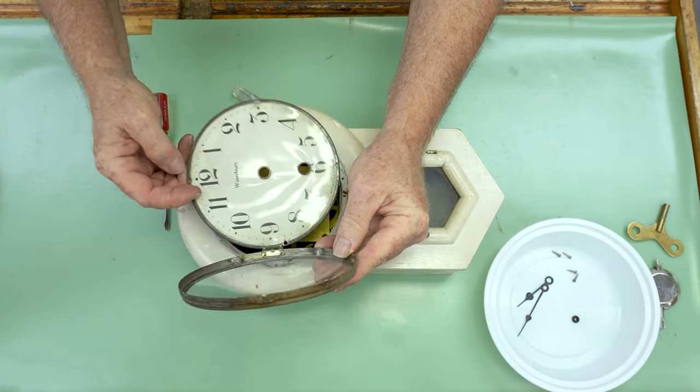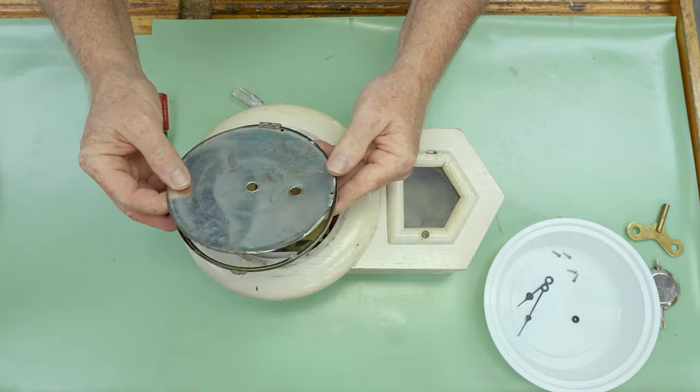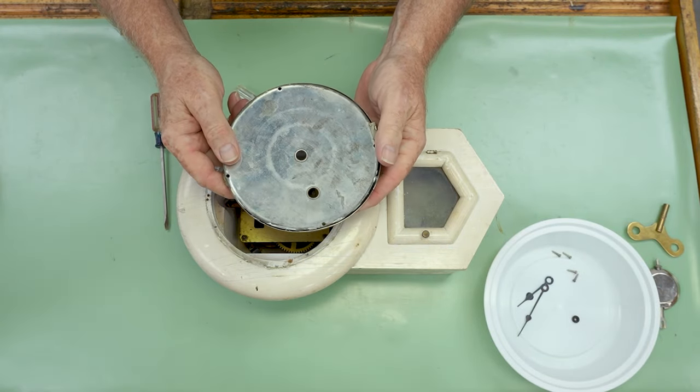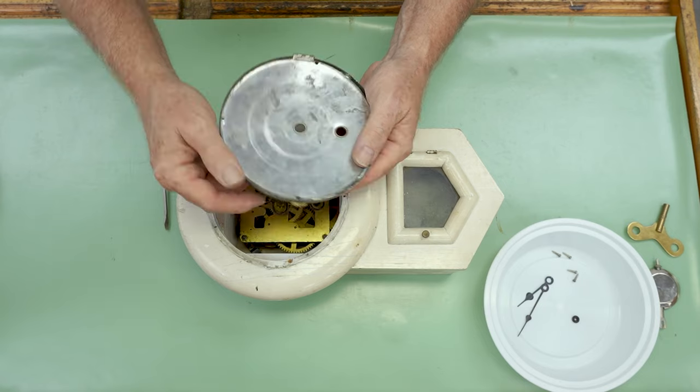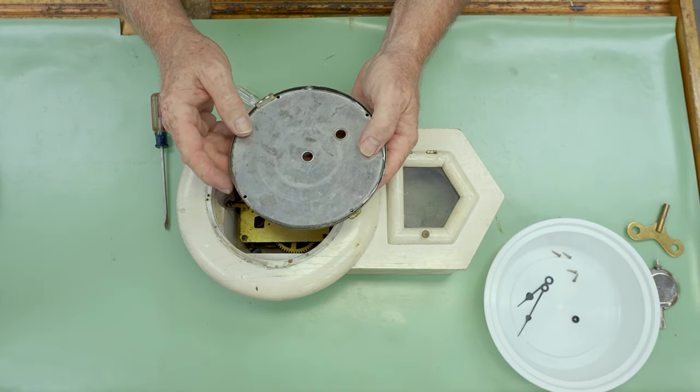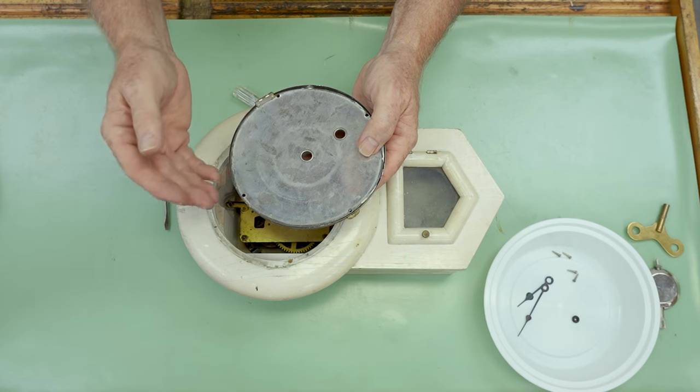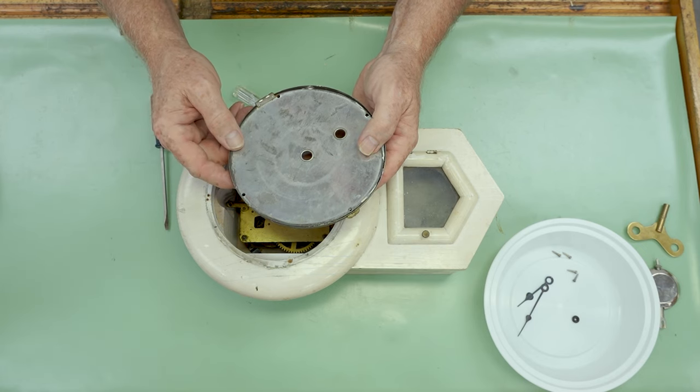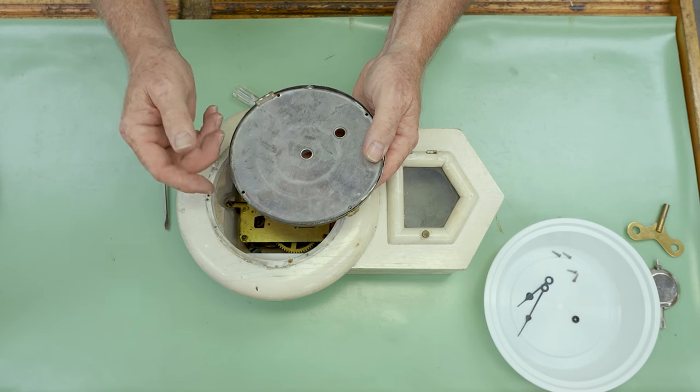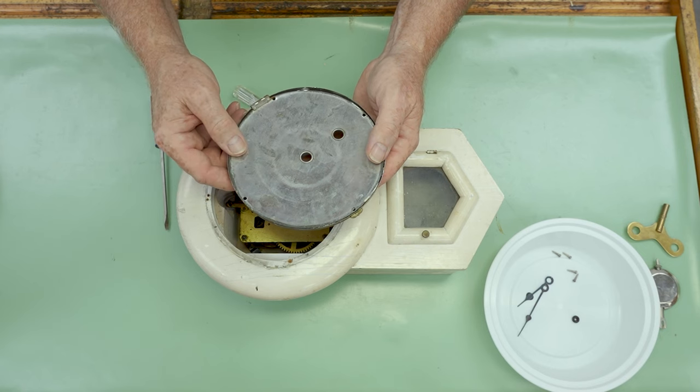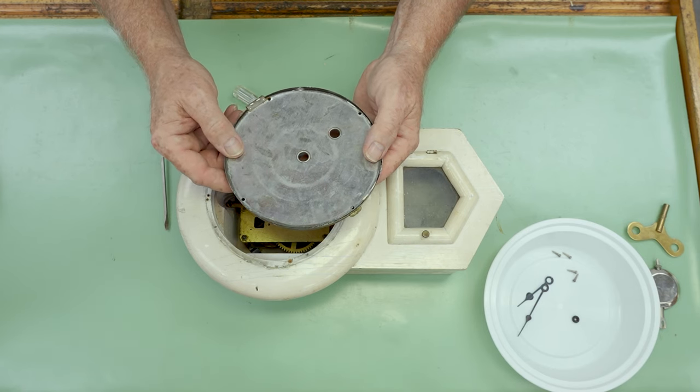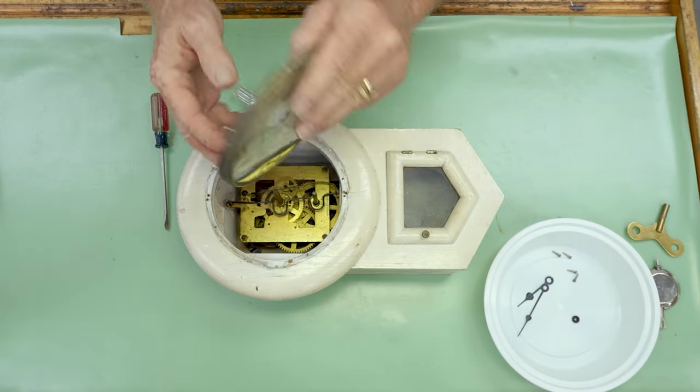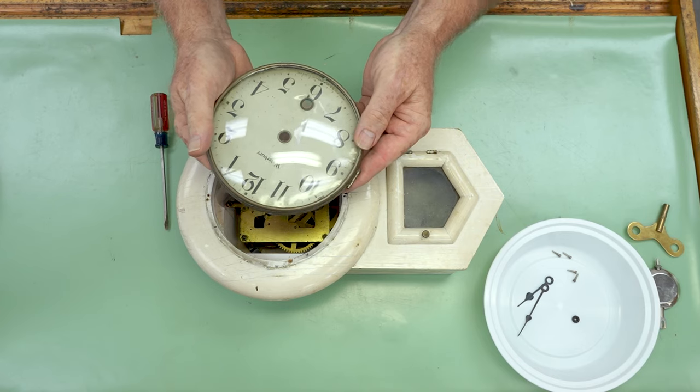Now, whenever I remove a dial from the movement, I always look on the back of it because it's amazing how many clockmakers would have put the date that say something like lubricated or oiled. Sometimes they'll put a name, initials. Sometimes they put the weather, what the weather is for that particular day that they were working on it. This one doesn't have anything like that. So we'll just put that safely aside.